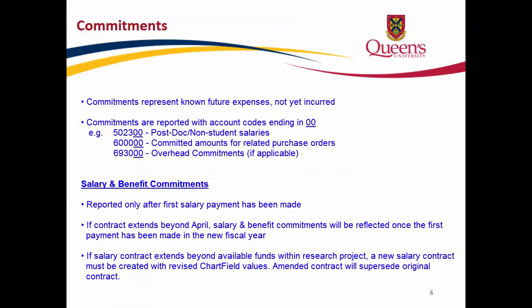Before I describe the next columns, there are a few details regarding commitments you should be aware of. Commitments represent known future expenses that have not yet been incurred. Commitments may relate to salary and benefits, purchase orders for goods and services, or overhead. Commitments will always be reported with account codes ending in 00. For example, amounts reported for account 502,300 represent salary commitments for post-doctoral non-student salaries. Amounts reported for account 600,000 represent committed amounts for a related purchase order. Amounts reported for account 693,000 represent overhead commitments.